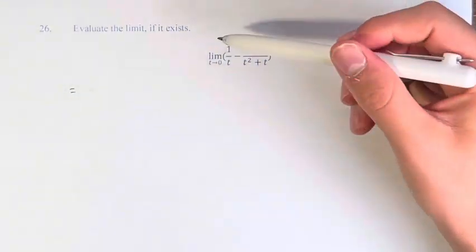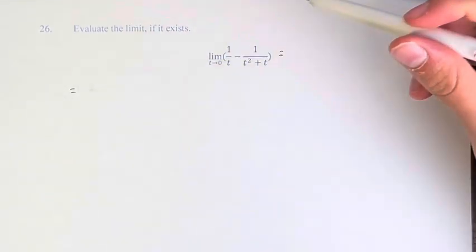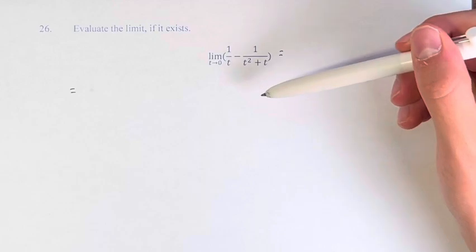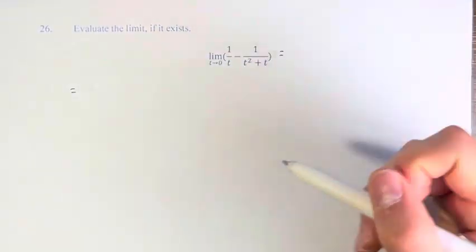What we're going to do is multiply the first fraction by the denominator of the second fraction, and the second by the denominator of the first. That will give you a common denominator that you can then use to subtract these two and turn them into one fraction.